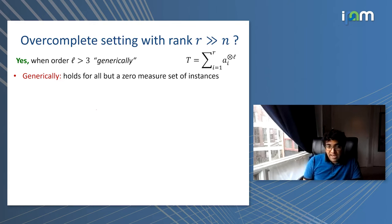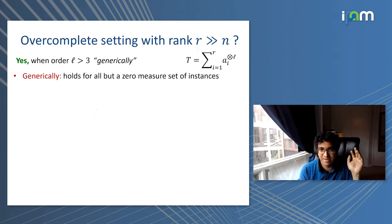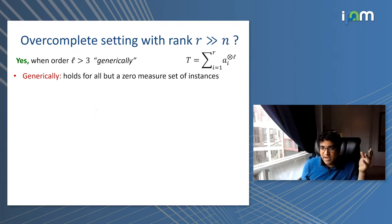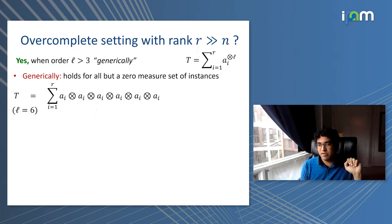There do exist efficient algorithms in the over-complete setting, but only when the order is larger than 3 — so four and above, we have algorithms that work even when the rank is larger than N. Many of these algorithms work generically, which in the algebraic geometry convention means it holds for all but a measure-zero set of instances. You are very unlikely to hit an instance where this doesn't hold.